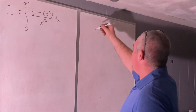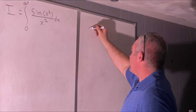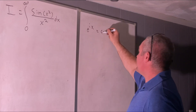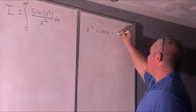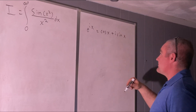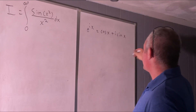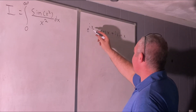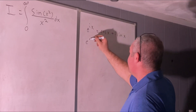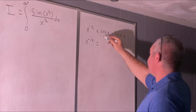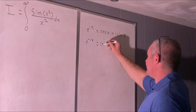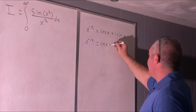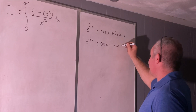The first thing we need to recognize is Euler's formula, which says that e to the ix is equal to cosine of x plus i sine x. If this is true, then e to the negative ix is equal to cosine of negative x, which is simply cosine x, plus i sine of negative x, which is simply minus i sine x.